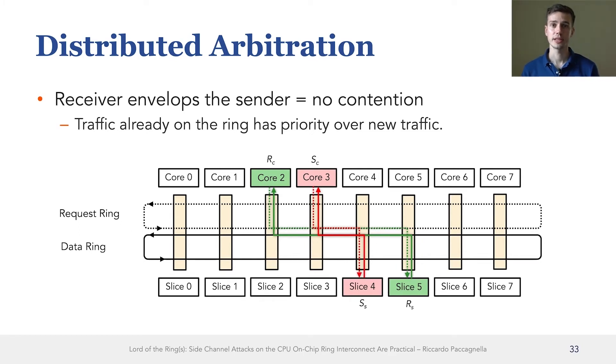And you can see here an example where the receiver envelops the sender, meaning that the path used by the sender is a subset of the path used by the receiver. In this case, we observe that the receiver never sees contention.